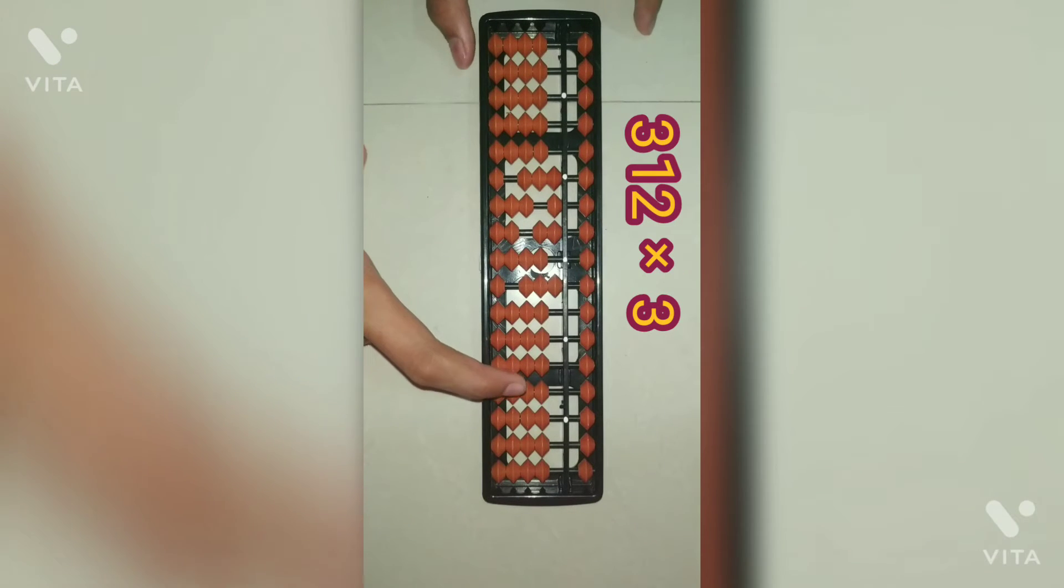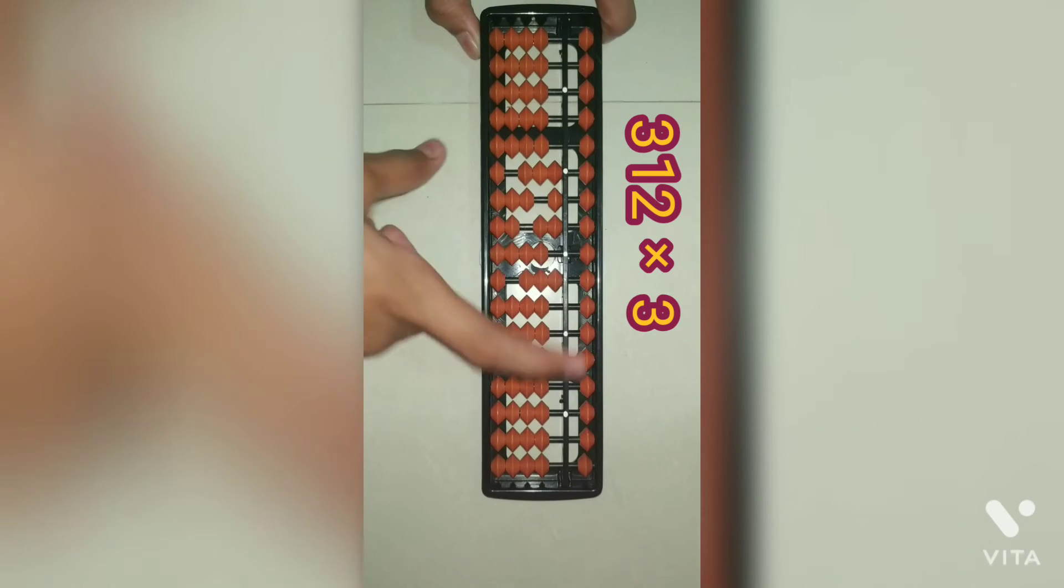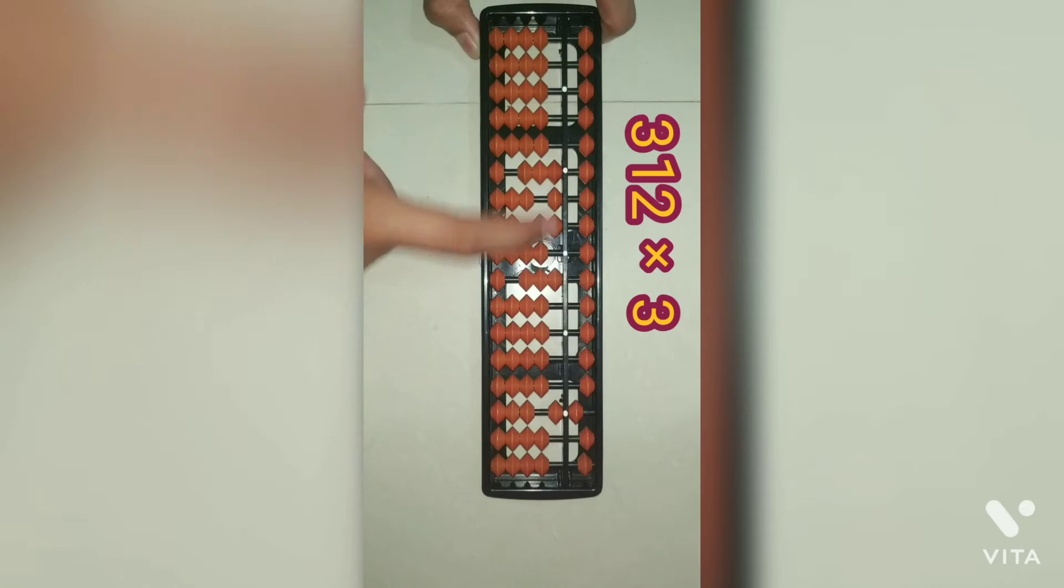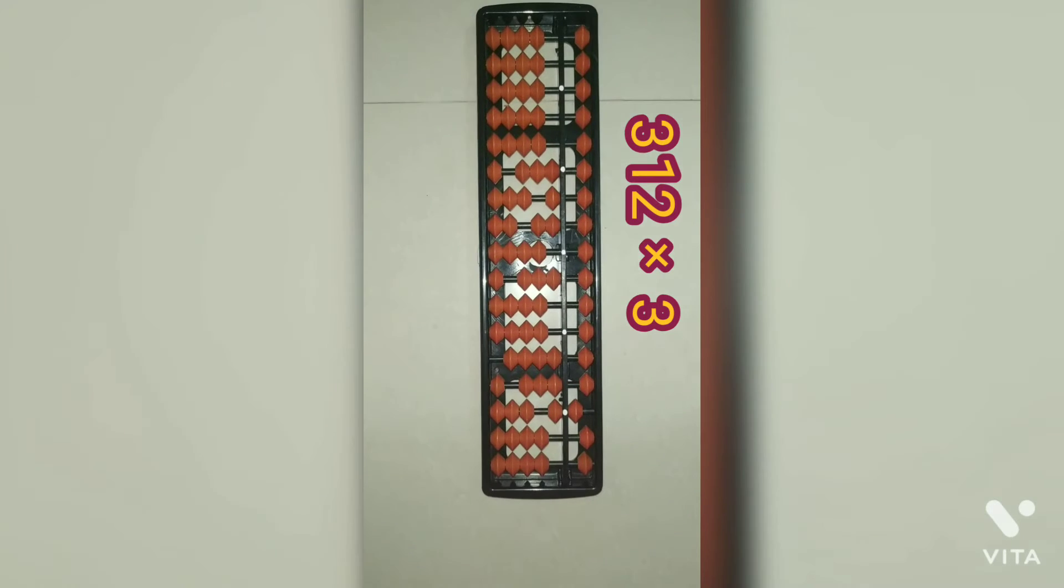We will start with the answer in this row. 3 ones are 3, 3 twos are 6. 3 ones are 3 and 3 threes are 9. So that's it.